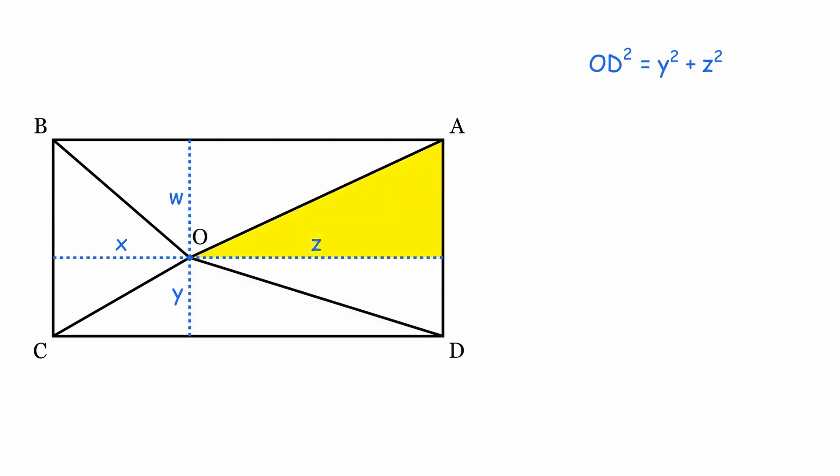Similarly for this triangle, we can write OA squared equals Z squared plus W squared. Then, OB squared equals X squared plus W squared, and OC squared equals Y squared plus X squared.